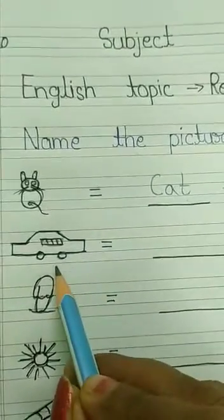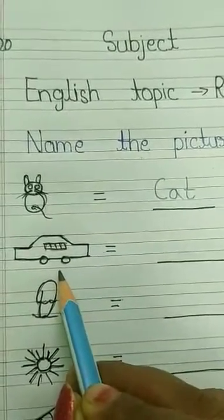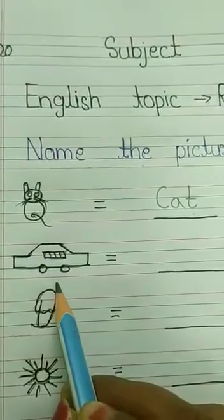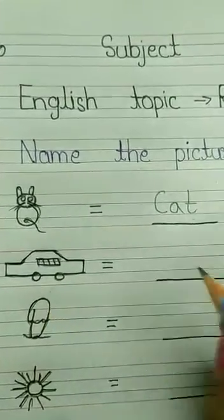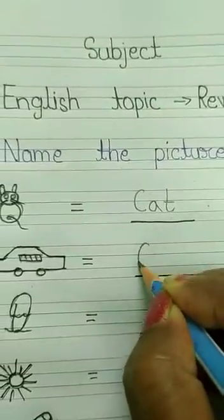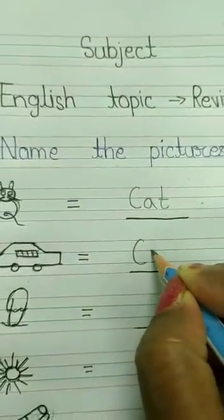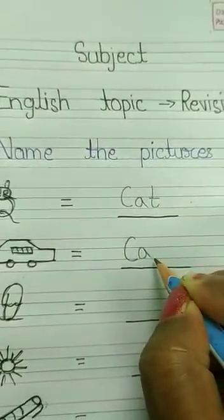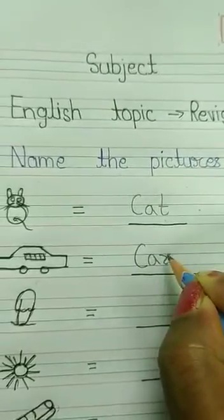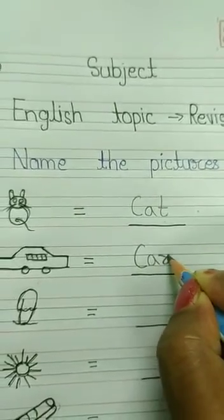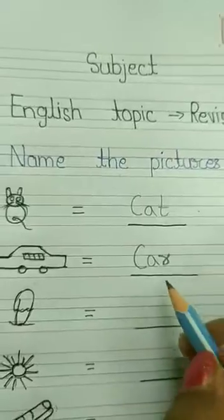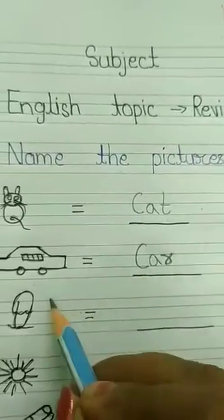Next picture क्या बना है? तुम लोग guess करो. Car है ना. C-A-R, car. Car means car — car देखे हो ना तुम लोग? C-A-R. आर ऐसे लिखते हो ना. तो C-A-R, car.